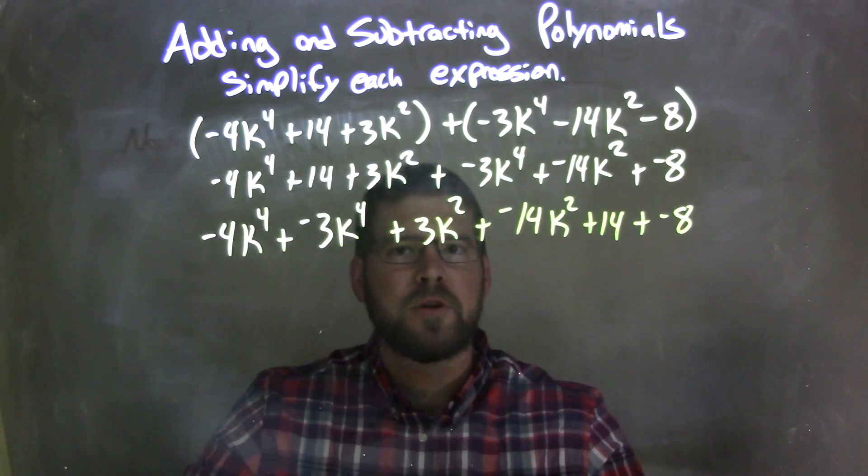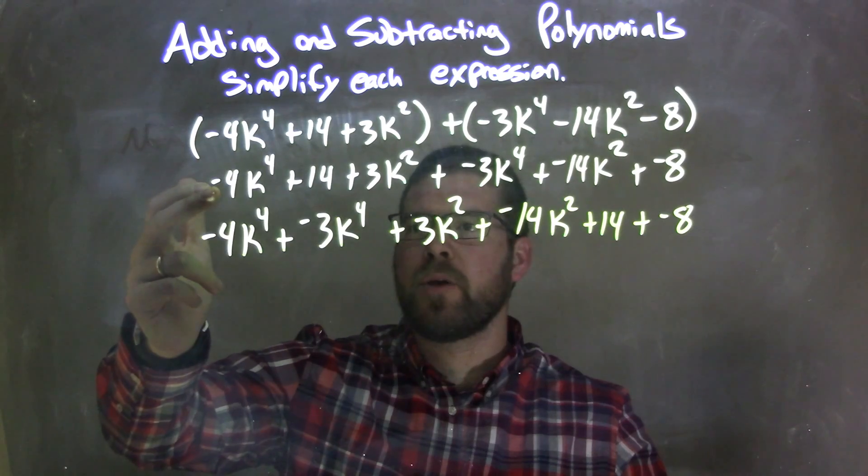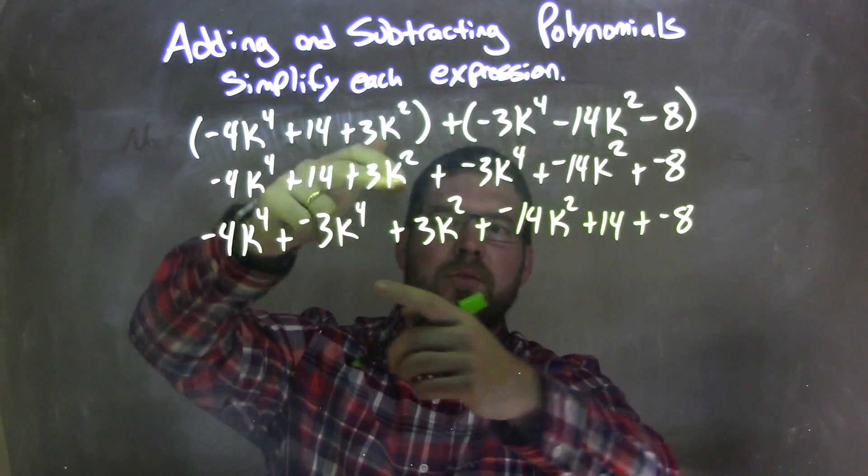Okay, we wrote a lot down. Let's double check we have everything. Let's just go line up. Term by term, negative 4k to the 4th, right there. 14, right here. 3k squared, 3k squared was right there.